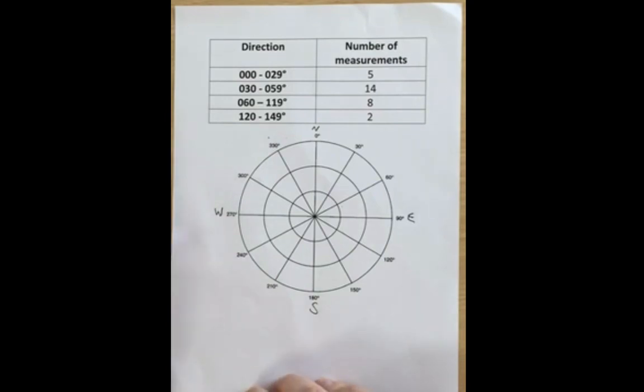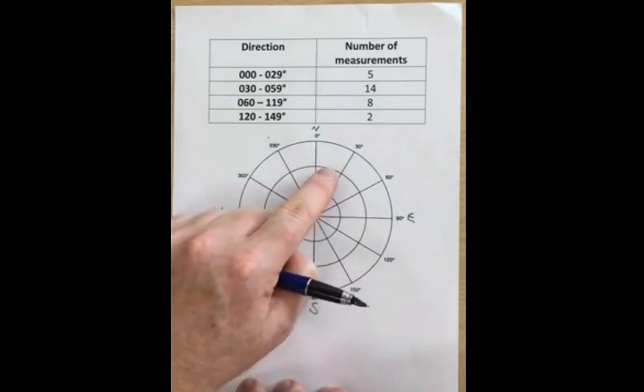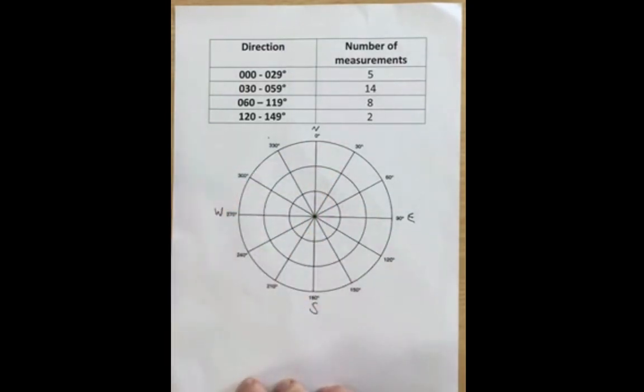The second piece of data we can plot on this is the number of values. And for this we use the concentric circles starting from the middle going out to the edge here to mark our values that we have.